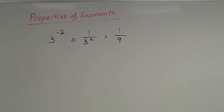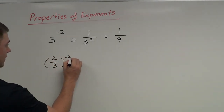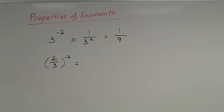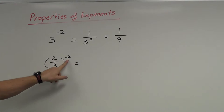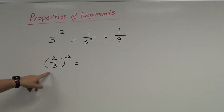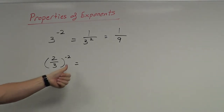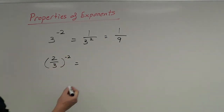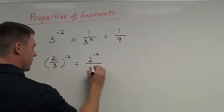Let's do another quick example. What if I have a fraction? Fractions can sometimes be a little bit more difficult. I'll try to show you the simplest way. Since I see this negative exponent, it's being applied to both of these numbers. I'm going to take this negative exponent and apply it to the 2 and to the 3, so it looks like this: 2 to the negative 2 over 3 to the negative 2.